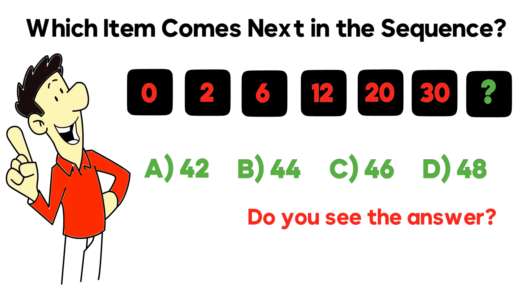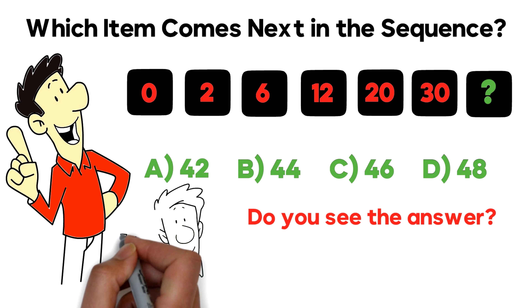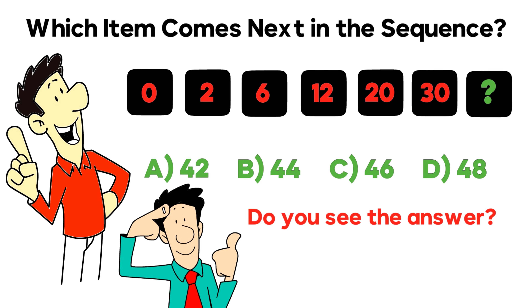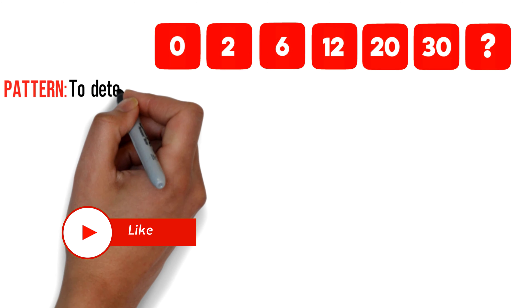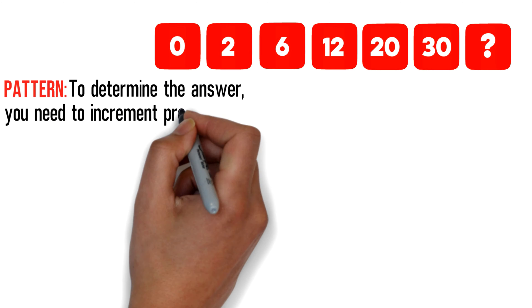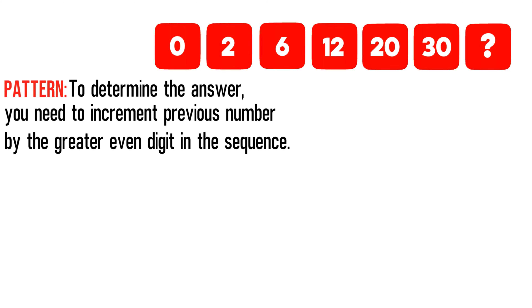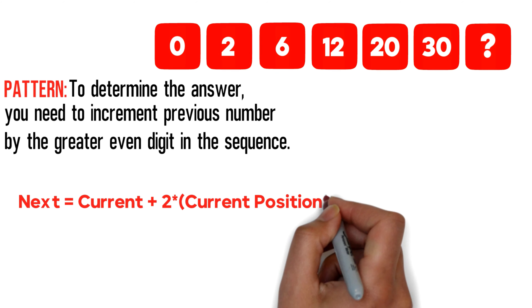As with any type of question, the key is to determine the pattern. To determine the answer in this particular case, you need to increment the previous number by the next greater even digit in the sequence. You can even come up with a formula: the next number equals the current number plus two multiplied by the current position in the sequence.